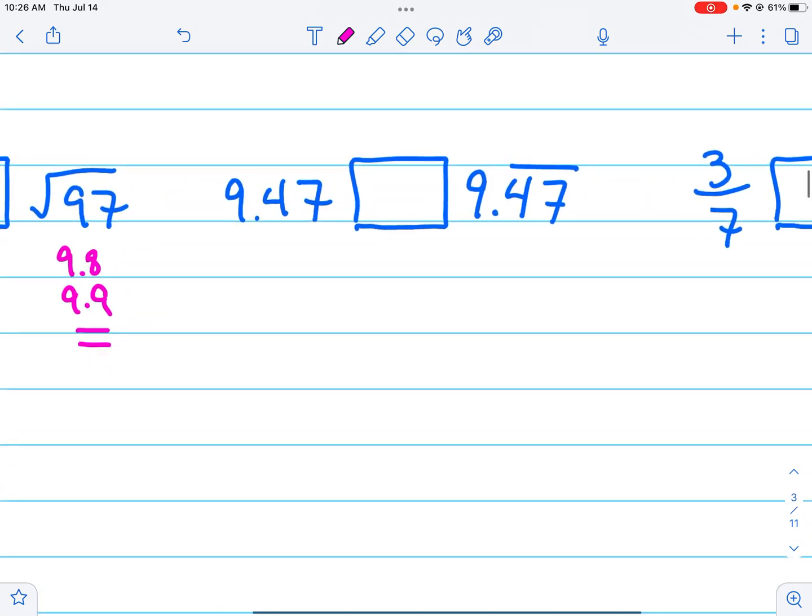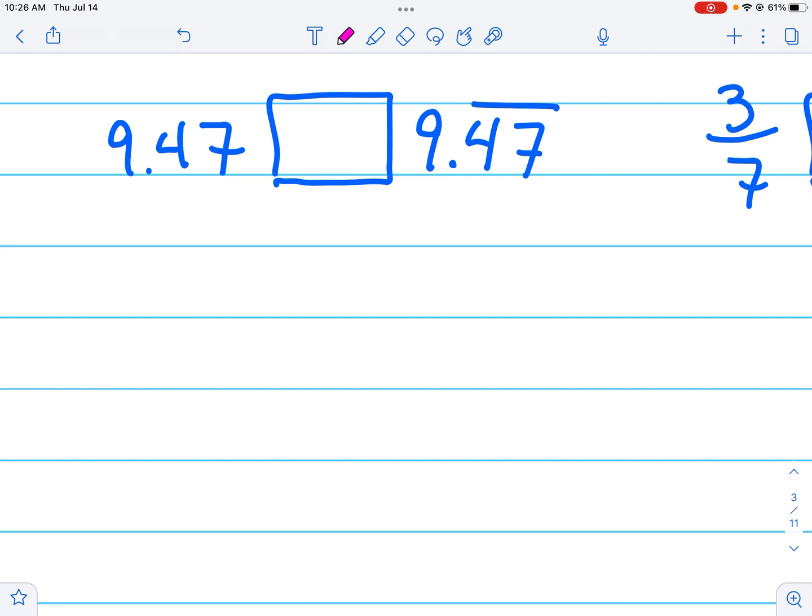In the middle one, I have two decimals: one terminates at 9.47, which means 9.47 and essentially just a bunch of zeros afterwards, and those zeros continue forever, or 9.474747 with that 47 pattern continuing forever. And what I would observe here is that the nines are the same and the fours are the same and the sevens are the same...